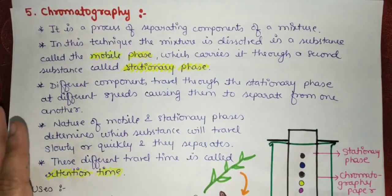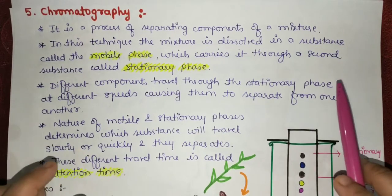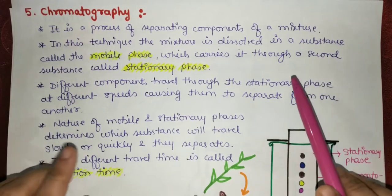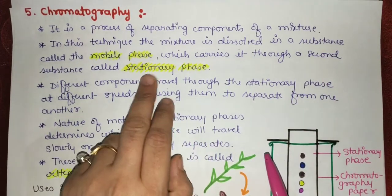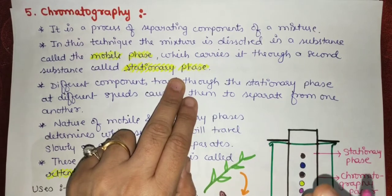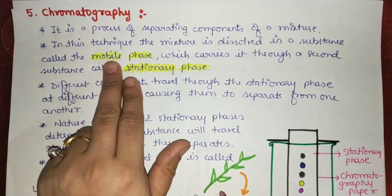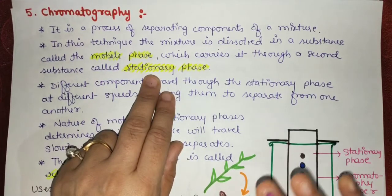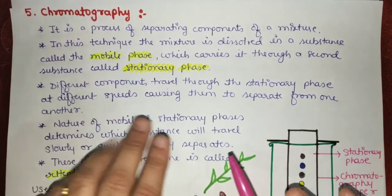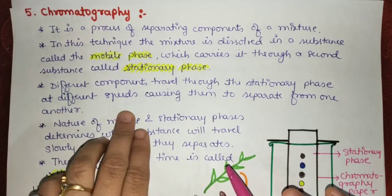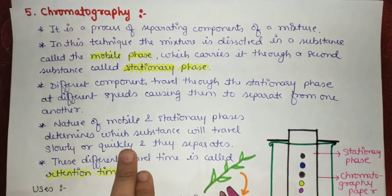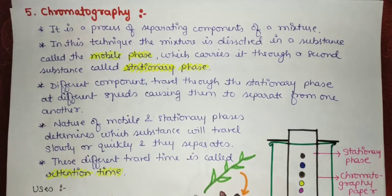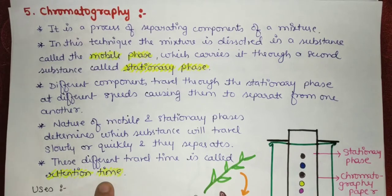Next is chromatography — a process of separating components of a mixture. The mixture is dissolved in a substance called the mobile phase, which carries it through a second substance called the stationary phase. The different components travel through the stationary phase at different speeds, causing them to separate. The nature of the mobile and stationary phases determines which substance travels faster or slower. The difference in travel time is called the retention time.